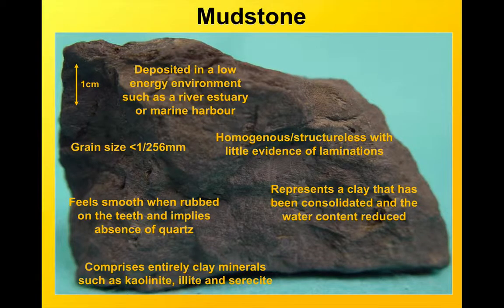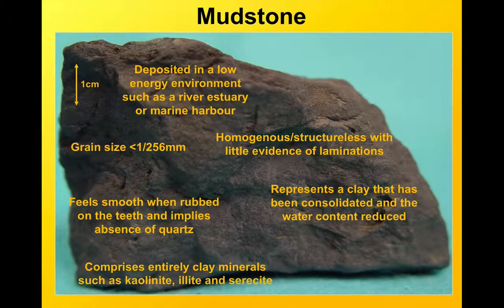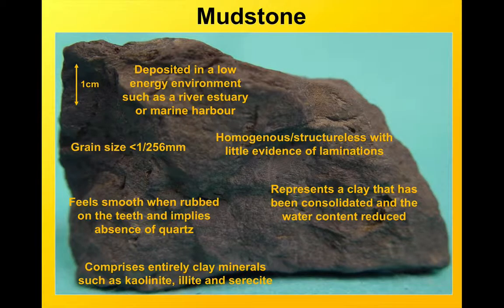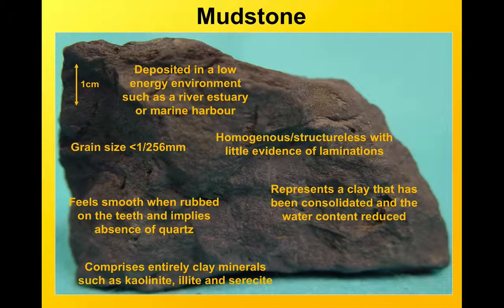The next rock, getting finer again, is mudstone. A mudstone is predominantly made of clay minerals, so the grain size is going to be less than 1/256th of a millimetre for most of the clasts. It can feel very smooth when you rub it. Mudstone can vary quite a lot — it's the most common sedimentary rock. It can be deposited in freshwater, marine environments, estuaries, deep sea, lakes, all types of environments. What they all have in common though is they're all low energy.